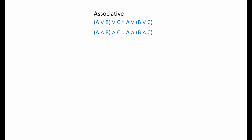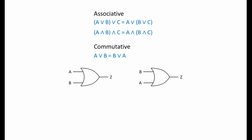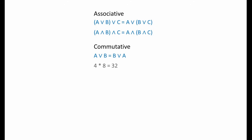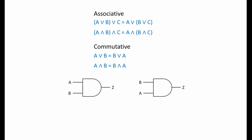The commutative property refers to the way that numbers can be moved around in an expression. For example, 4 plus 8 equals 12, and so does 8 plus 4. Algebraically, A plus B equals B plus A — the Boolean equivalent is A OR B equals B OR A. The logic gate equivalent is rather trivial: it makes no difference if we swap around the inputs of an OR gate. Similarly, 4 times 8 equals 32, as does 8 times 4. Hence A times B equals B times A, so A AND B equals B AND A — swapping the inputs of an AND gate makes no difference.